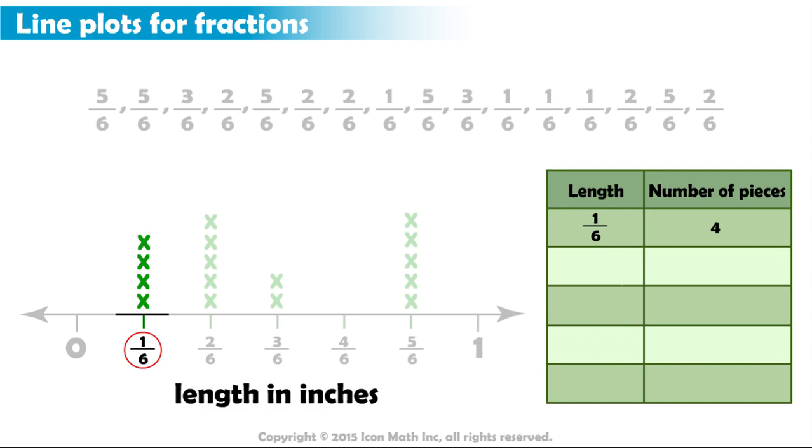Then, we count how many X's are plotted over the fraction 2/6 to find how many puzzle pieces have a length of 2/6 inches. There are 5 X's. So, there are 5 puzzle pieces with a length of 2/6 inches. And we do the same for every fraction. Here are the answers in the table.